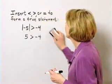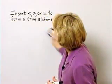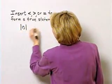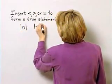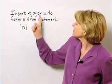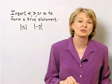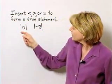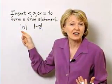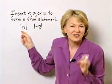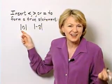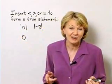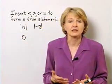Let's try that one more time. Suppose we have the absolute value of zero and the absolute value of negative eight. I'd like to insert 'is less than,' 'is greater than,' or 'is equal to' to form a true statement. What is the absolute value of zero? The absolute value of zero is zero's distance from zero on a number line. Zero lies zero units from zero, so the absolute value of zero is zero.